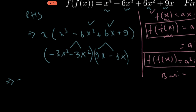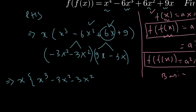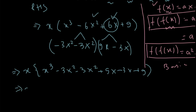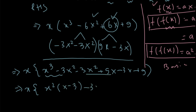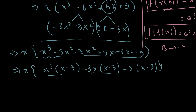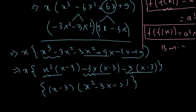Let me rewrite this. So x multiplied with x³, then instead of -6x² we write -3x² - 3x², and instead of 6x we write +9x - 3x, and +9. Now factorizing the expression inside the bracket: from the first two terms take x² common giving (x - 3); from the next two take -3x common giving (x - 3); from the last two take -3 giving (x - 3). So we can take (x - 3) common, leaving x²(x-3) - 3x(x-3) - 3(x-3), which factors as x(x - 3)(x² - 3x - 3).